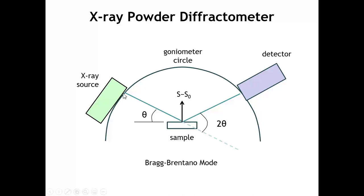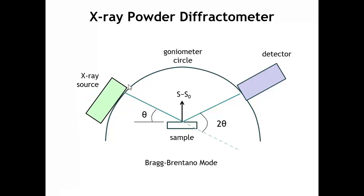The key components are: one, an x-ray source. This is going to be some source where we generate monochromatic x-rays. Typically, that would be by bombarding a metal target with hot electrons from a filament. The most common kinds of targets would be a copper x-ray source or a molybdenum x-ray source.